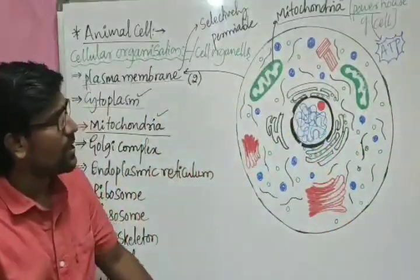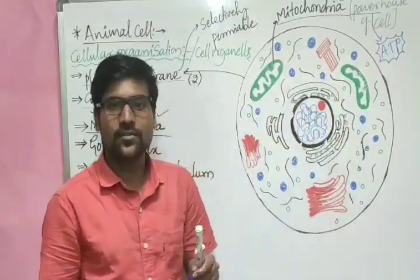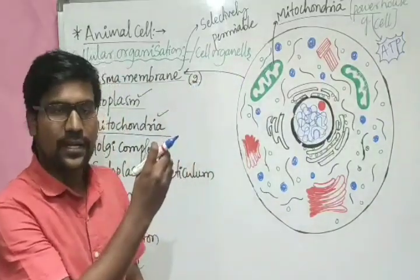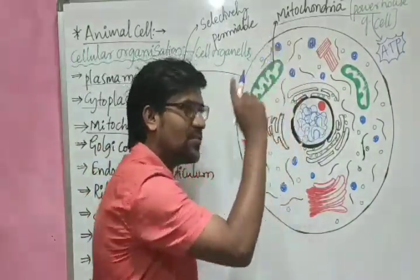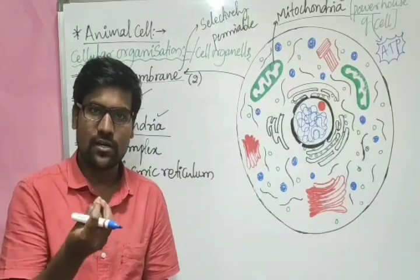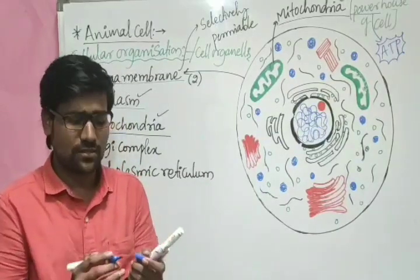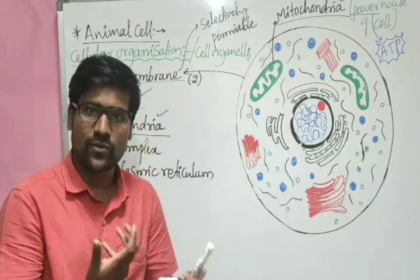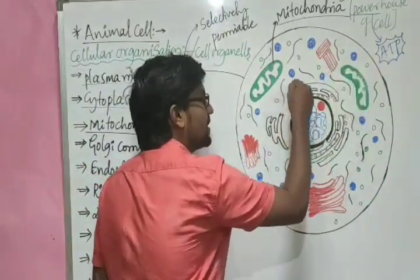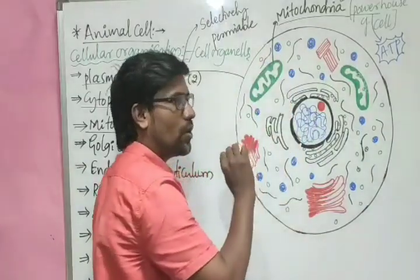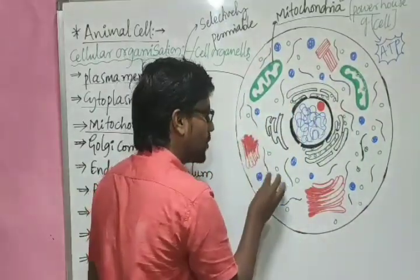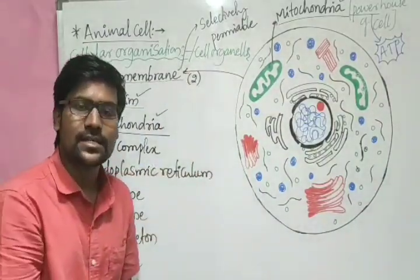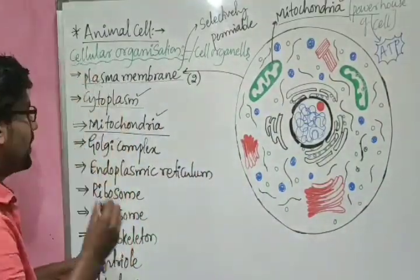ATP stands for Adenosine Triphosphate. It is one energy packet. Just like money — if you have coins you can purchase any materials you want — similarly, if ATP molecules are provided by the mitochondria, all other parts of the cell will work using those ATP molecules. That is why mitochondria is called the powerhouse of the cell. I am giving just a brief introduction to each cell organelle.